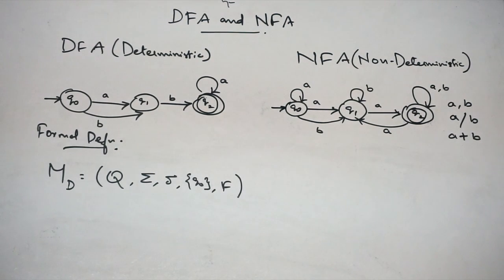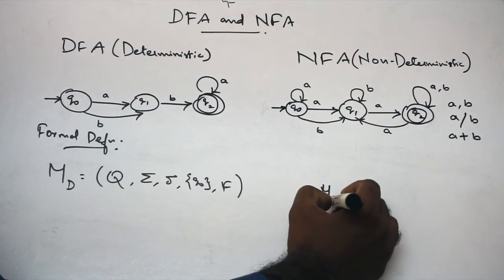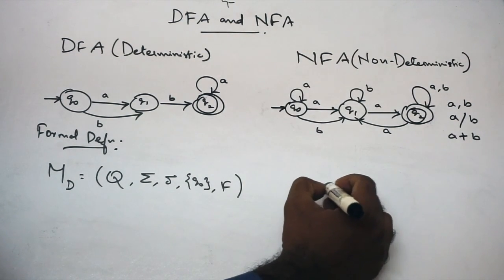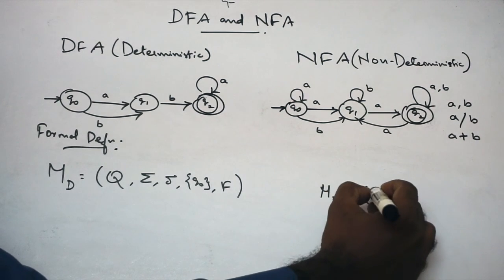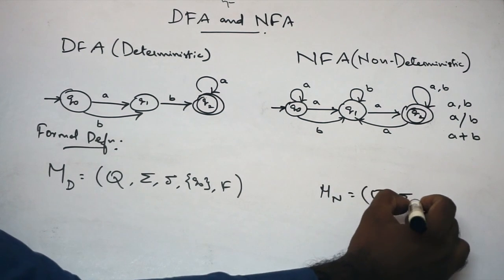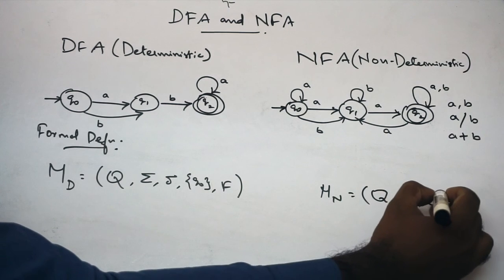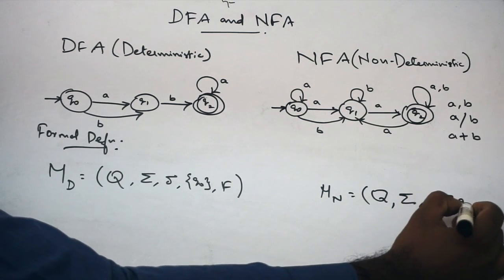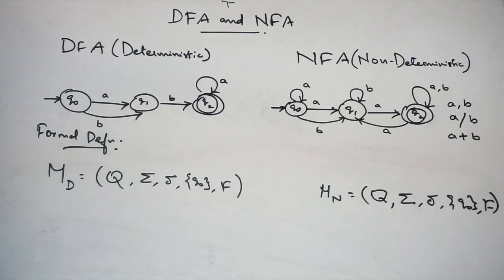In this case, M suffix N is non-deterministic — that is states, alphabets, transition function, initial state, final state. If you are talking about DFA we mention D, and for NFA we mention N. Transition function is defined differently. DFA and NFA — final states are defined.